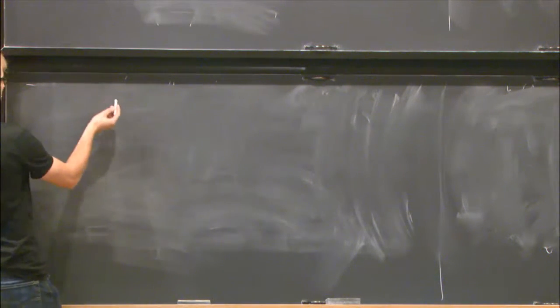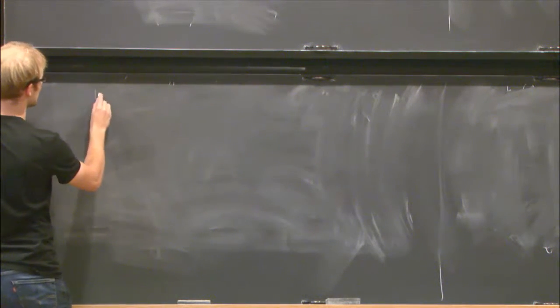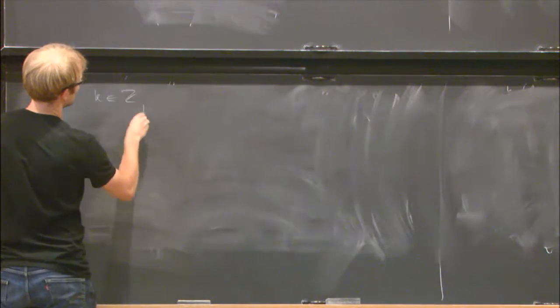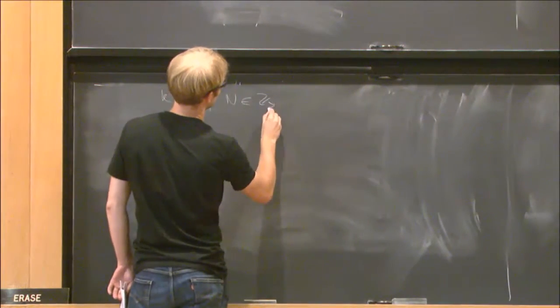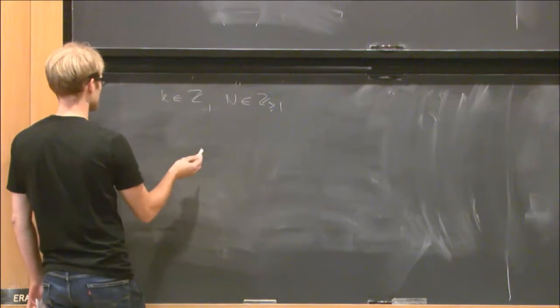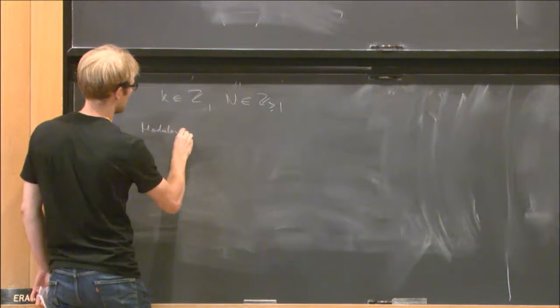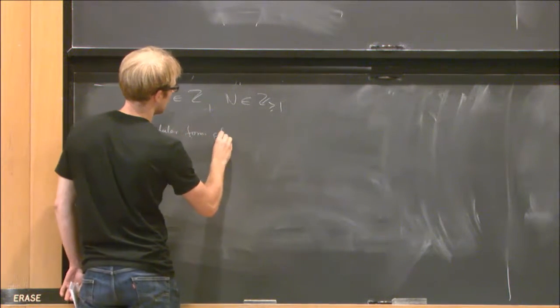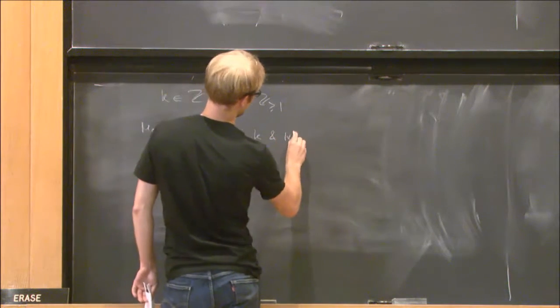So before I tell you what a periodic modular form is, let me tell you what a modular form is. I'm going to take k an integer and I'm going to take n some positive integer, and then a modular form of weight k and level n,